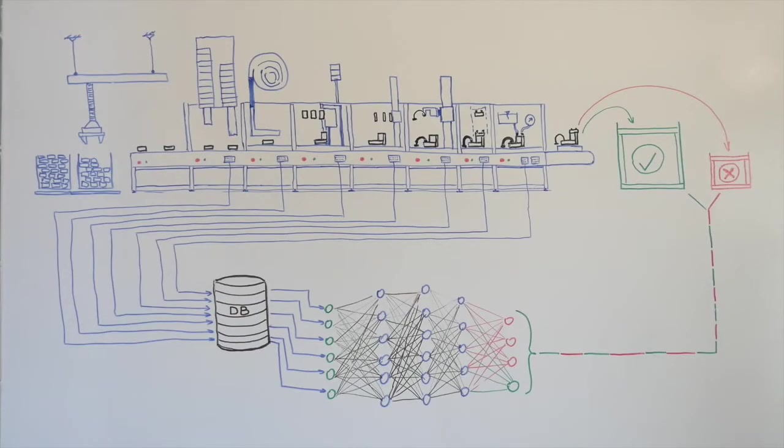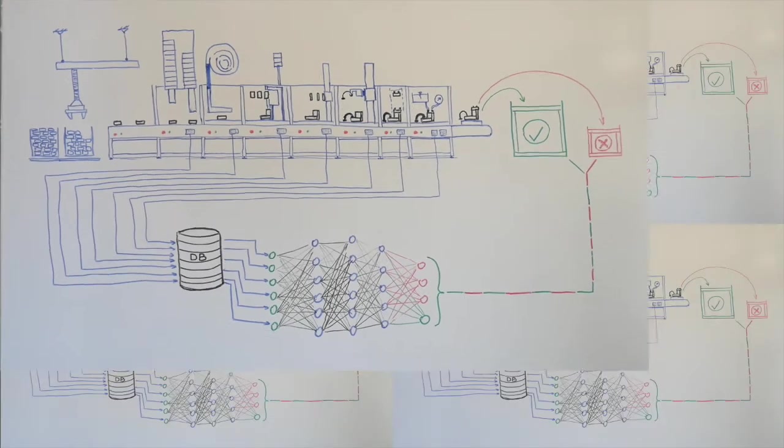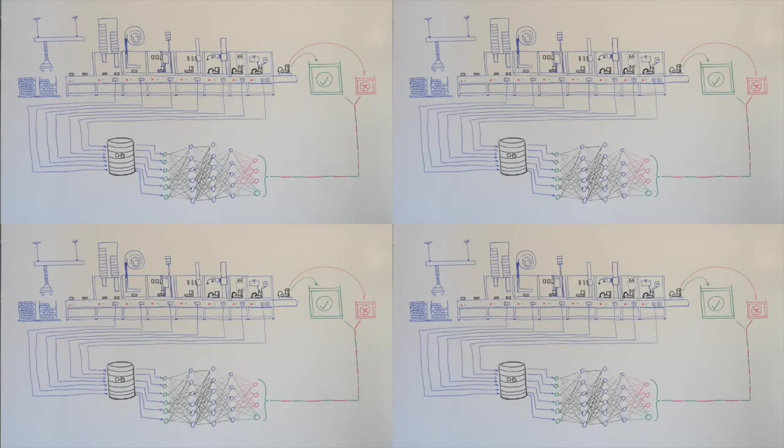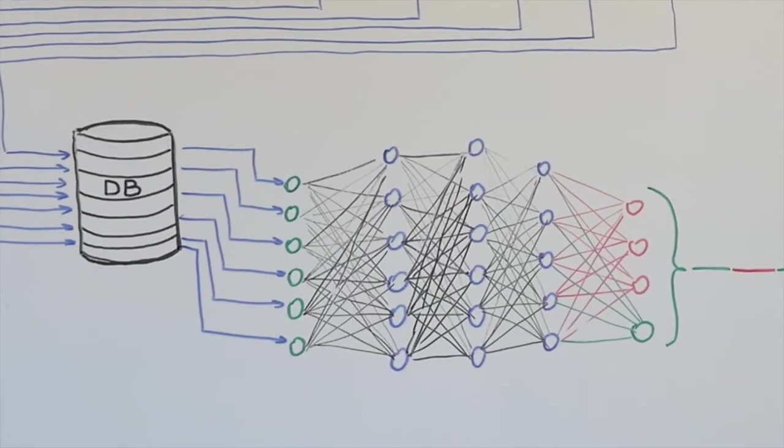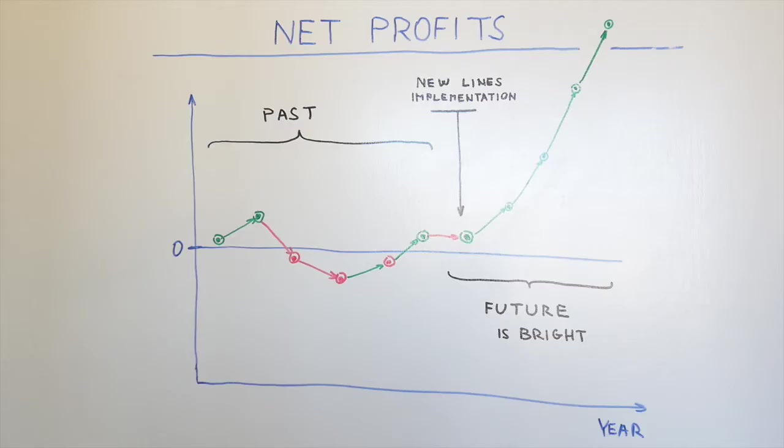The project was officially launched and three more production lines were built. During the implementation of the findings from the pilot line, the team focused on the influential variables predicted by the model. After some significant work, they evaluated the scrap rate gain. They were quite surprised to find out that the situation did not show any improvement in comparison to the pilot run.